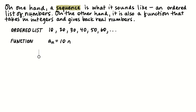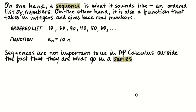All good discussions about series start with a discussion of sequences. A sequence is exactly what it sounds like — it's an ordered list of numbers. It's also a function that only takes in whole numbers. One example of a sequence you're probably familiar with is 10, 20, 30, 40, 50, 60, and so on. Sequences are not super important to us in AP Calculus outside the fact that they're what we put inside of a series.